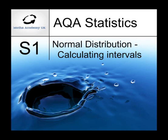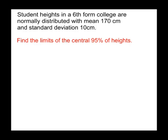The Normal Distribution: Calculating Intervals. Students' heights in a sixth form college are normally distributed with mean 170 cm and a standard deviation of 10 cm.